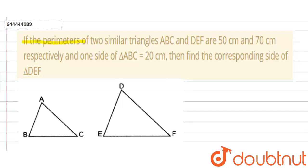The question is: if the perimeter of two similar triangles ABC and DEF are 50 cm and 70 cm respectively, and one side of triangle ABC is equal to 20 cm, then find the corresponding side of triangle DEF.